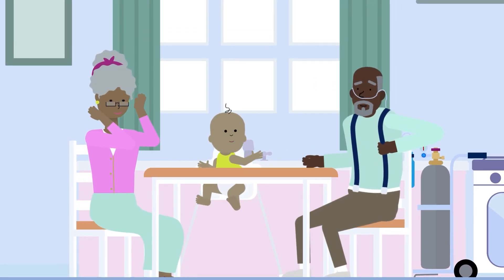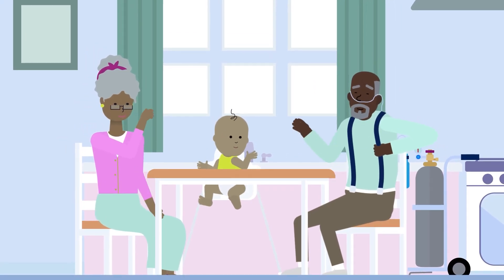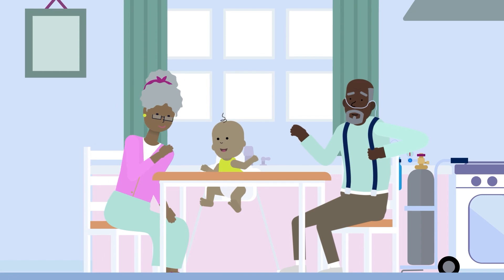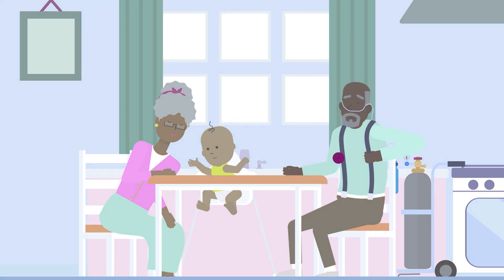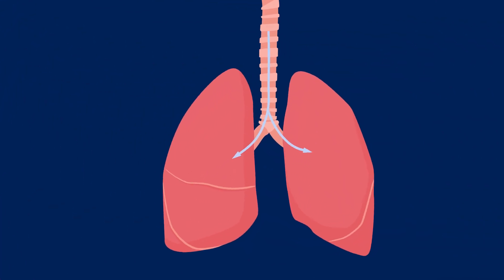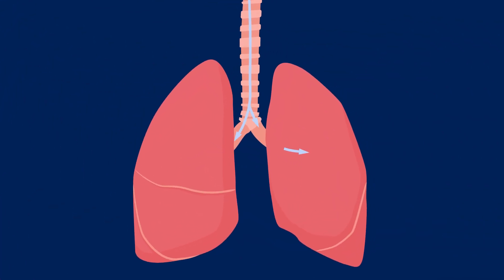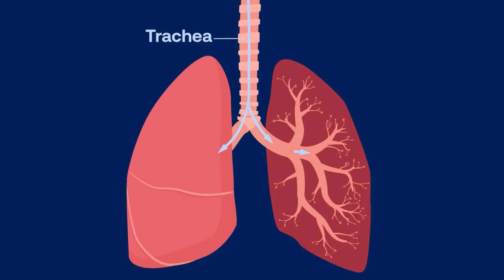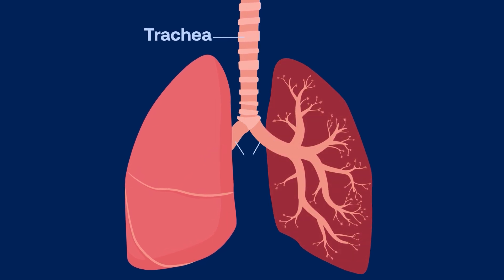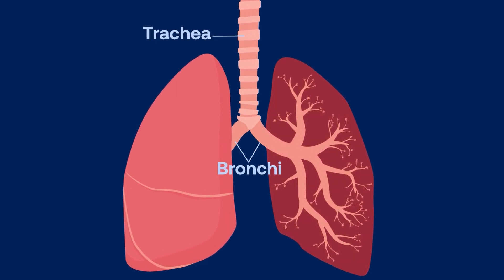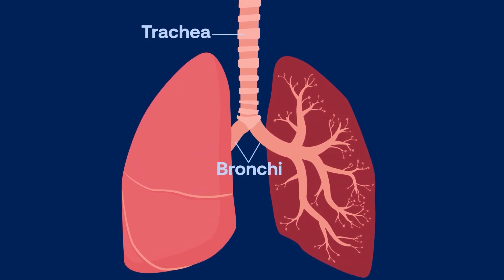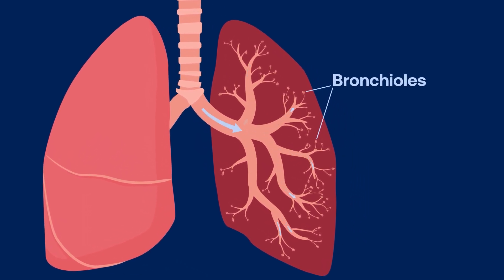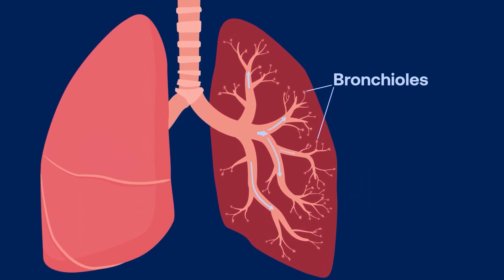Before we can understand how indoor air quality impacts our lungs, we first need to understand how our lungs work. When you breathe in through your nose or mouth, air travels down your airways, or trachea, dividing into your right or left lung via the bronchi. The bronchi then separate into small tubes called bronchioles.